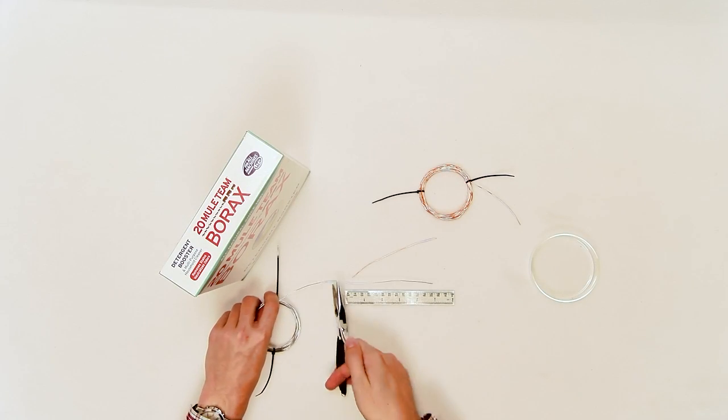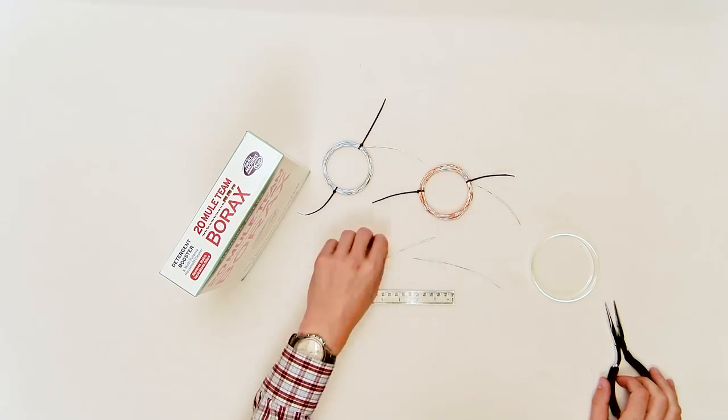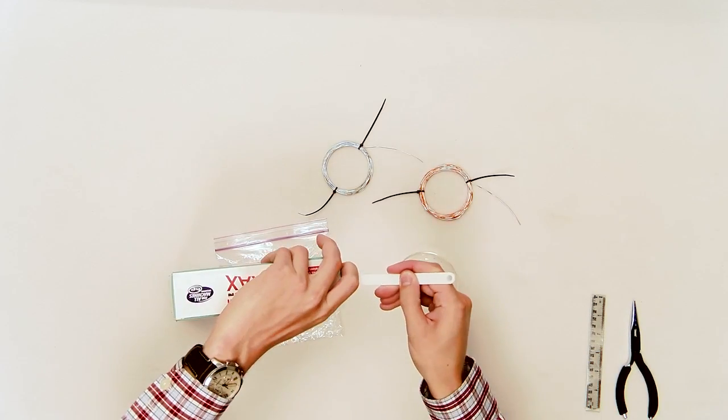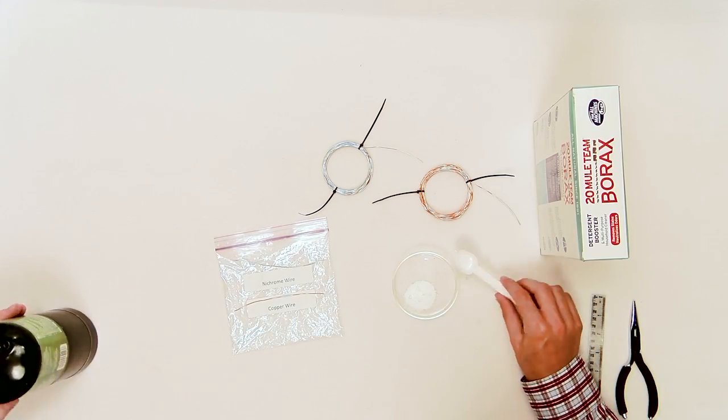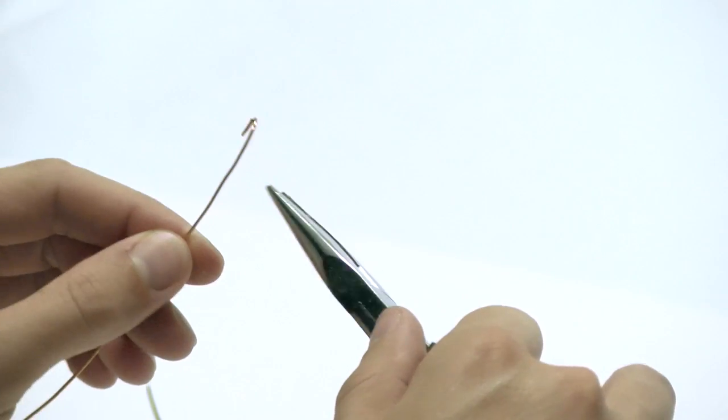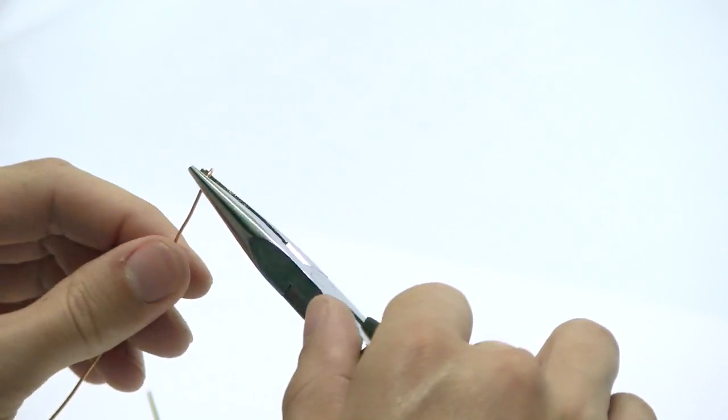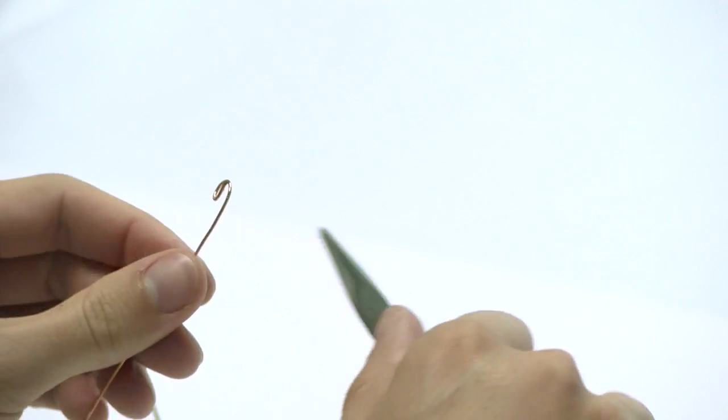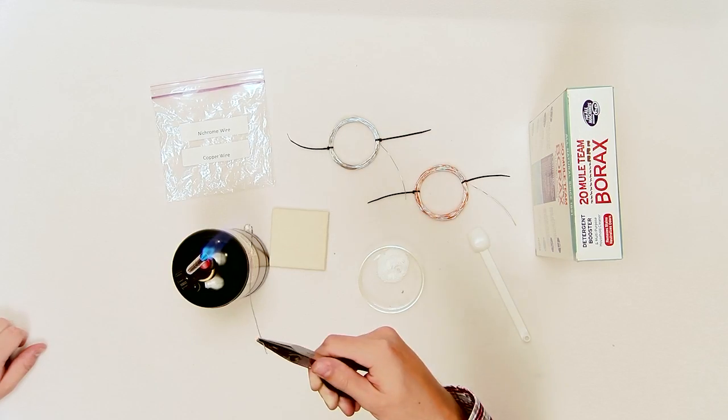Cut two pieces of copper wire and two pieces of nichrome wire, each about 12 centimeters long. Place a small amount of borax, about a teaspoon, in a watch glass or other heat resistant container. Use the pliers to form a small loop on the end of each wire. The loop should be slightly larger than the eraser on the end of a pencil.